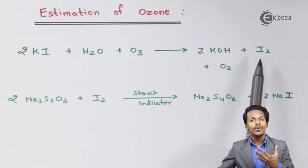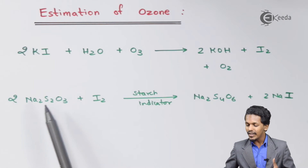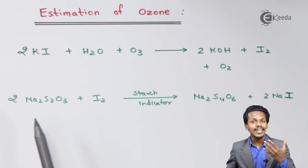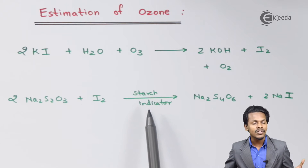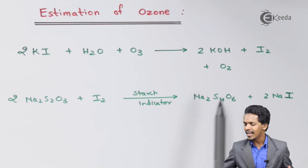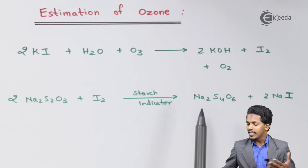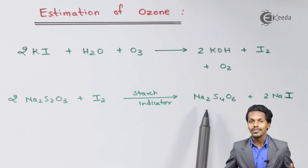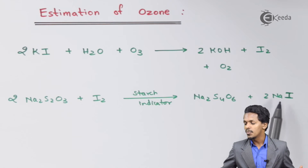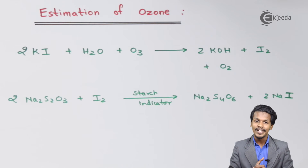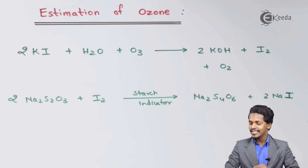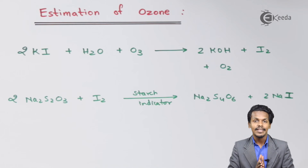Whenever this I₂ is released, we treat it with a standard solution of sodium thiosulphate. When the reaction occurs in the presence of a starch indicator, there will be a color change, and the product obtained is known as sodium tetrathionate along with 2 moles of NaI. By this we can get the end point of the titration, and by certain calculations we can easily determine the percentage of ozone. This is the procedure for the quantitative estimation of ozone.